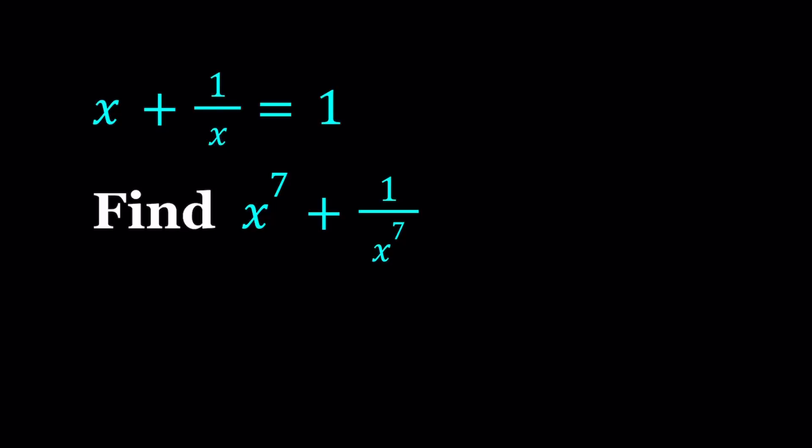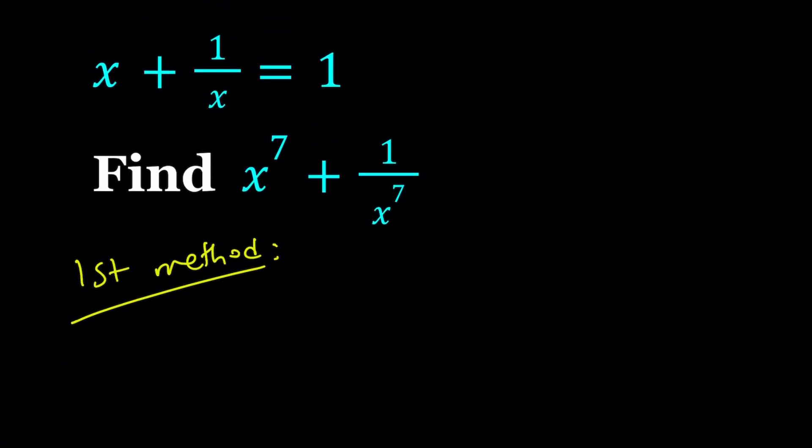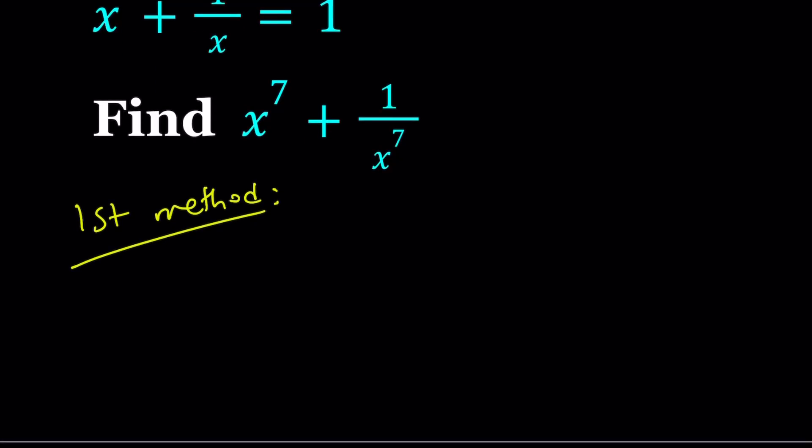First method. My first method is basically looking at this expression. I want to get to the 7th power. Obviously, you can raise both sides to the 7th power. I think that will be the fourth method. You can definitely do that. I haven't tried it, but I believe it will work. But you will get some other powers in the meantime. So I'm going to build up to 7th power. First step. I'm going to take this and raise it to the 3rd power.